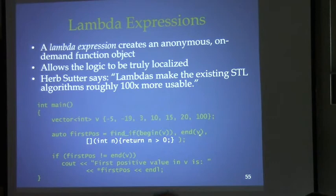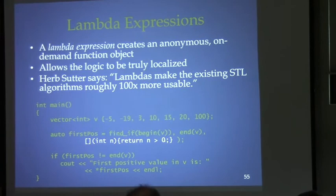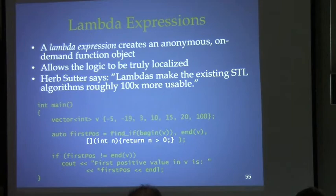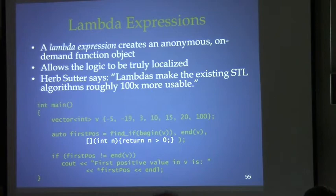Lambdas are C++'s answer to this issue. We can say `find_if`, give it our iterators, and then put an anonymous function object right there — generating the exact same code as a named function object class, but with the logic placed right at the point of use. This is like a use-once-per-location function object. The syntax is a pair of square brackets introducing the lambda, followed by the parameter list and the body — the square brackets signal that what follows is an anonymous function object.